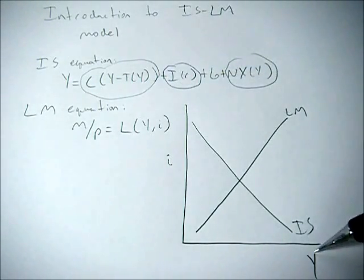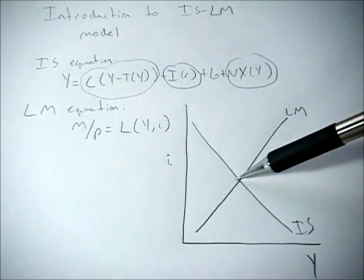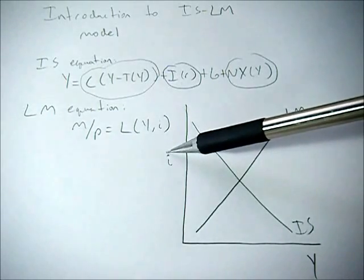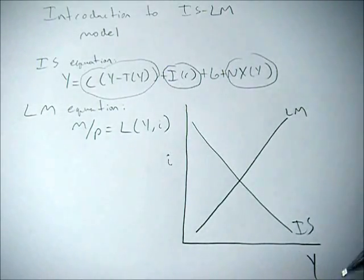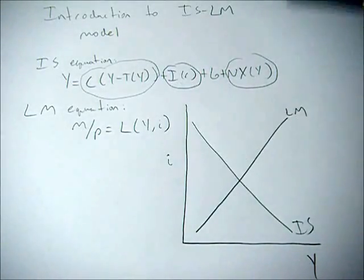And the increase in Y is necessary to also increase the amount of saving going on in the market because people are willing to save less because the interest rate went down. So they need to have more money in order to save the same percentage of it.